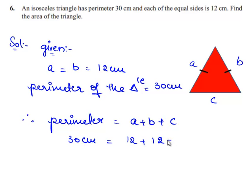Therefore 12 plus 12 plus C. Therefore 30 is equal to 24 plus C. This implies C is equal to 6 cm.